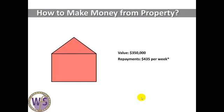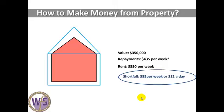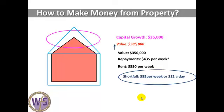Let's look at a property at $350,000. The repayments are $435 a week and it's renting for $350 a week — a very standard property you could get in a lot of places in Australia at the moment. So you've got a shortfall of $85 per week, or $12 a day — 2 cups of coffee. Why would you want to lose $12 a day? Because properties go up in value on average 10%. It doesn't go up every single year like that — it has its peaks and troughs — but on average you'll make $30,000 capital growth per year on that property.